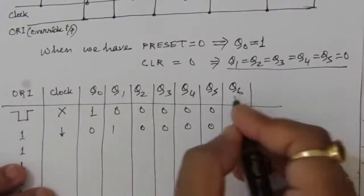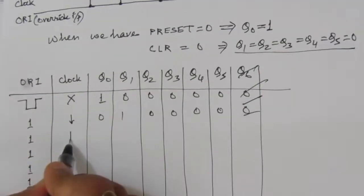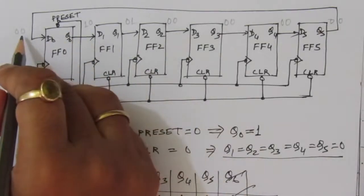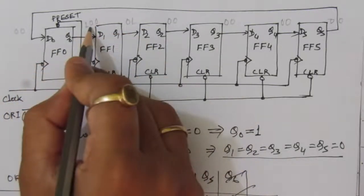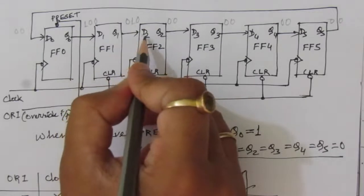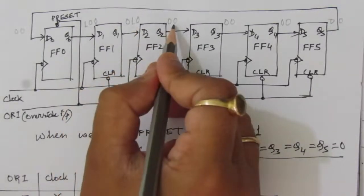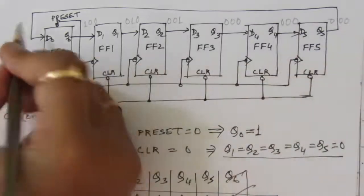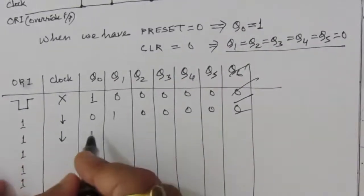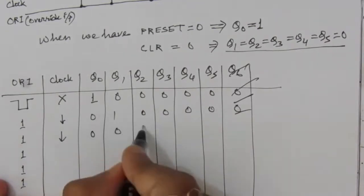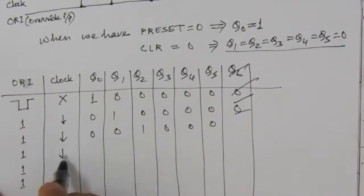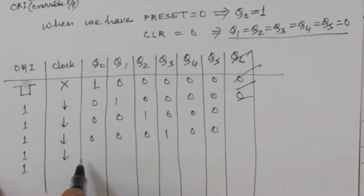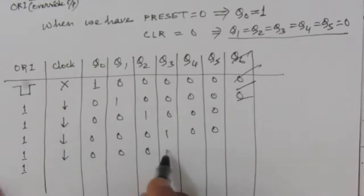On the next clock negative edge, the 1 shifts again. Q1 had input 1, so Q2 becomes 1, and Q1 becomes 0. After the second clock pulse: 0,0,1,0,0,0. After the third clock pulse: 0,0,0,1,0,0. After the fourth negative clock edge: 0,0,0,0,1,0.